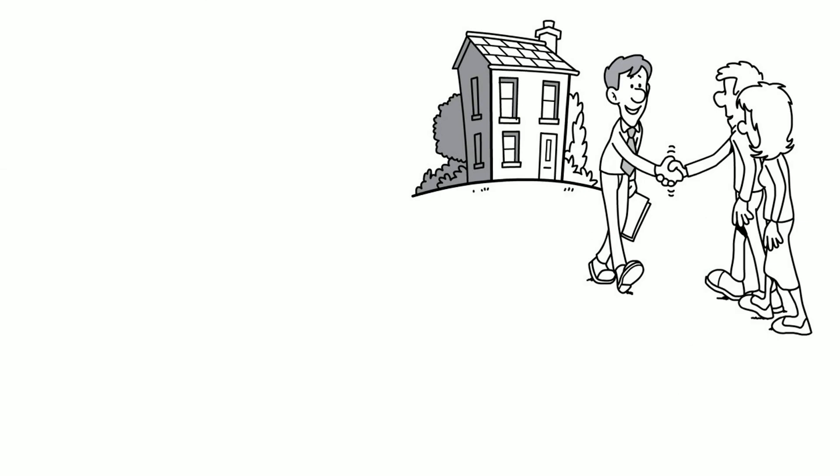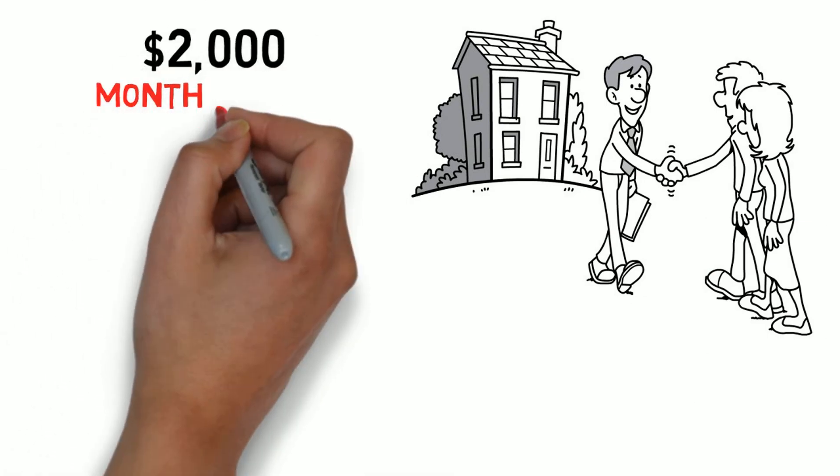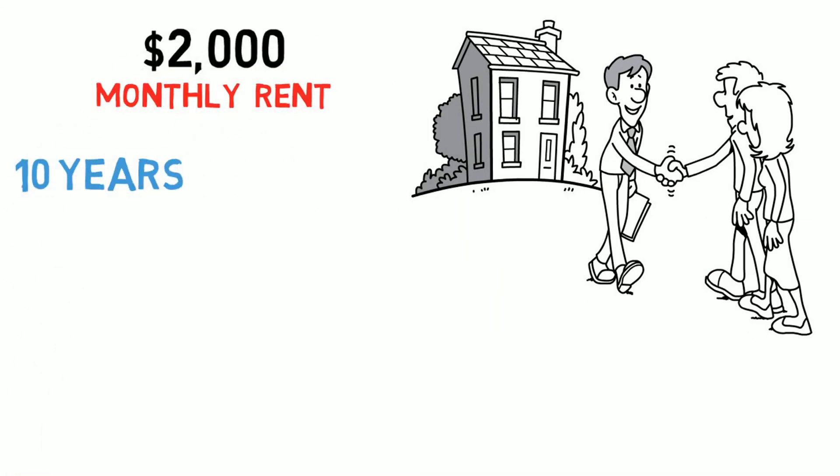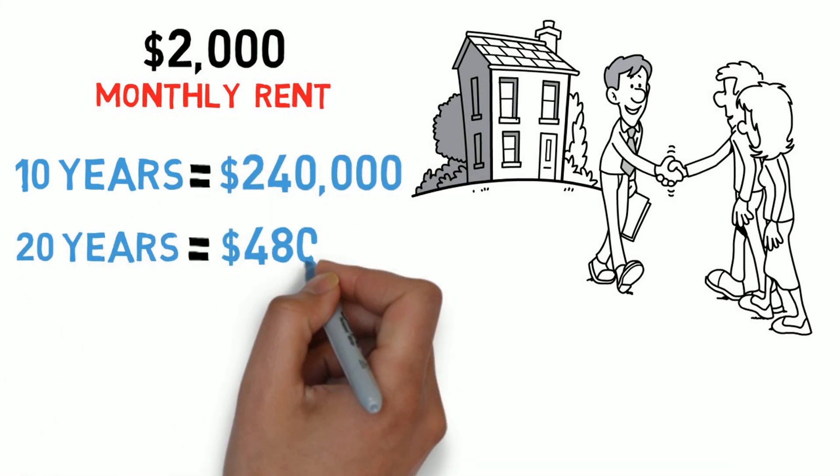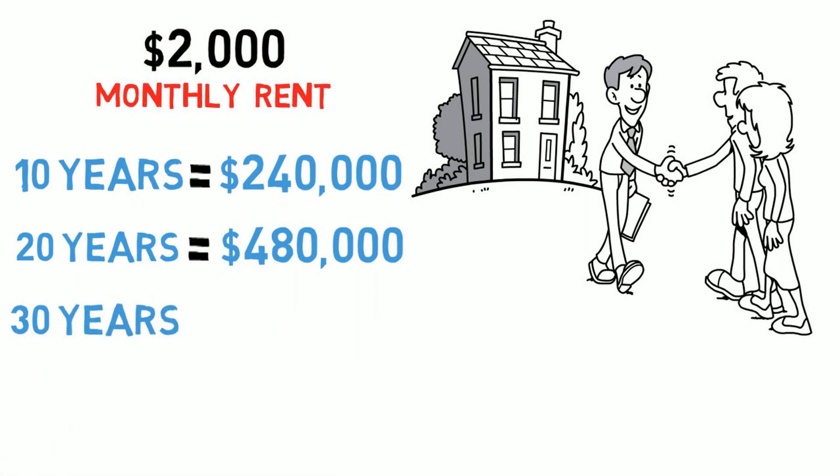If you are paying $2,000 a month in rent with no rent increase, this is what you will pay. 10 years, $240,000. 20 years, $480,000. 30 years, $720,000.